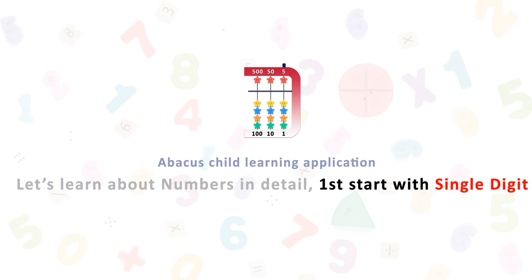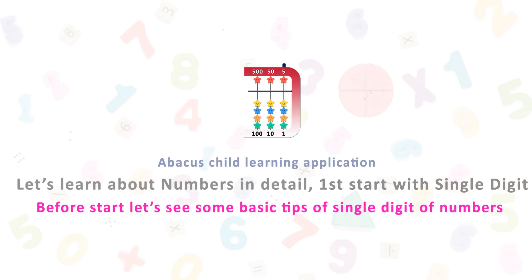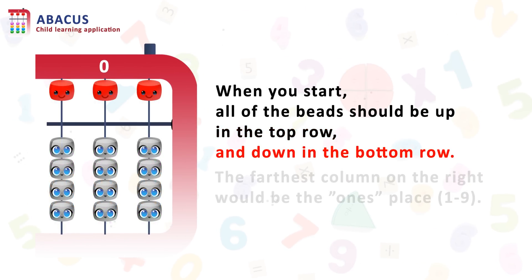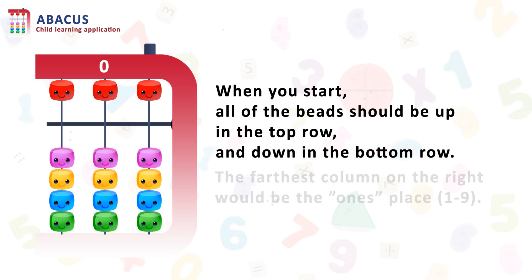Let's start with single digit. Before we start, let's see some basic tips of Abacus. When you start, all of the beads should be up in the top row and down in the bottom row.